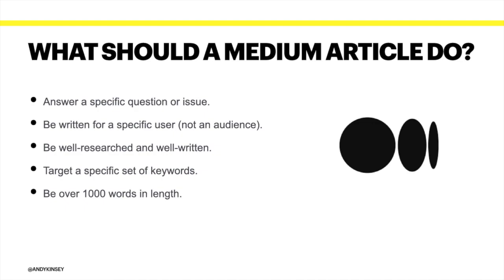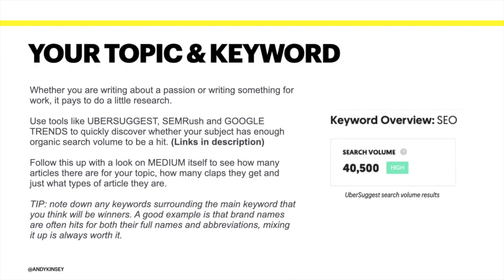For point four, you've got to have a specific set of keywords you're targeting. You'll have a primary keyword and two or three around it, because targeting a single keyword doesn't do too well on Medium. You'll already have a target topic you're passionate about — whether you're telling a story or writing for work. The tools I'd suggest are Ubersuggest, SEMrush (which is a paid tool but really good), Google Trends, and the Google Keyword Tool, which lets you see search history and seasonality.